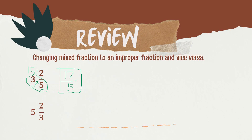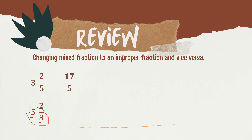How about 5 and 2 thirds? Let us change 5 and 2 thirds to an Improper Fraction. Multiply the whole number by the denominator: 5 times 3 equals 15. Then 15 plus 2 equals 17. Copy the denominator, which is 3. So the answer is 17 over 3.